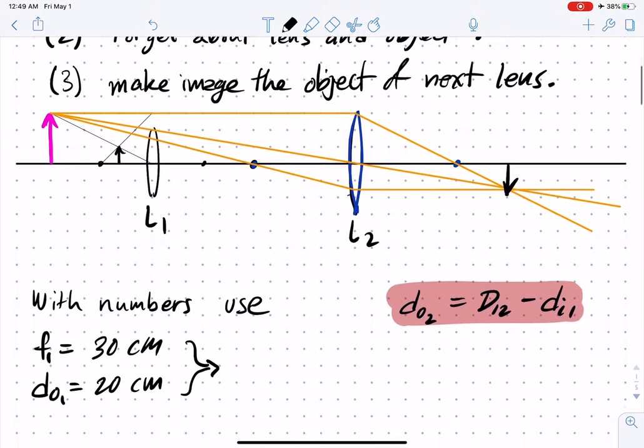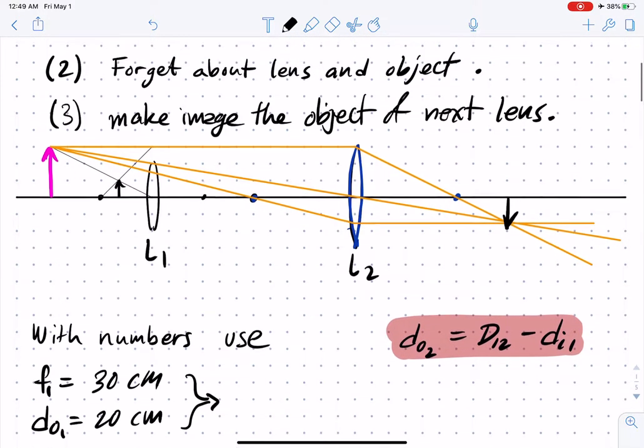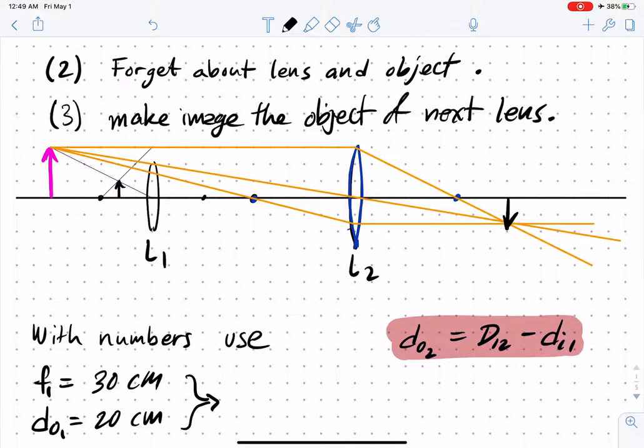We can also do this with numbers. The important part here is that if we let this distance be the distance between the lenses, the object distance for the second lens is that separation minus the image distance of the first. In this example, the image distance is negative, so we subtract that negative distance. If the image had been on this side instead, it would have been more obvious that we needed this subtraction, but the subtraction works in both cases.